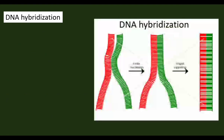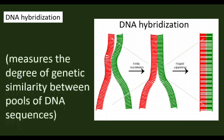DNA hybridization is a molecular technique in which two single-stranded DNAs from different sources are allowed to combine and form a double helix. When the two DNAs are similar, they will combine well and form a double helix. When they are less similar, they do not combine well. This technique is used to measure the degree of genetic similarity between pools of DNA sequences. Genetic similarities between collections of DNA can be achieved by the DNA hybridization method.